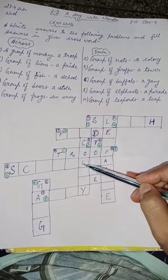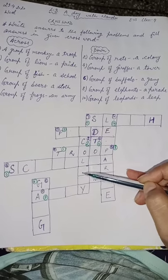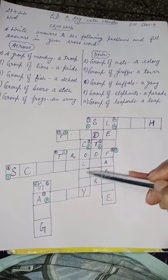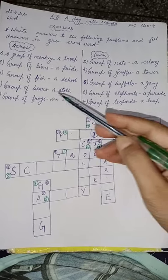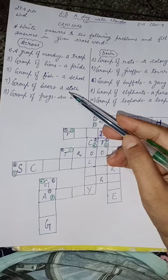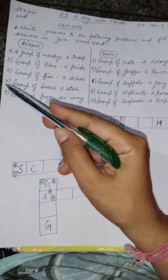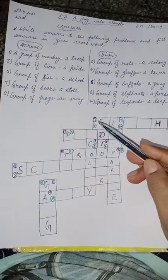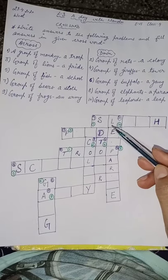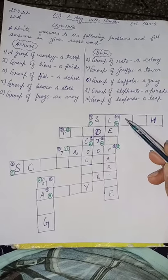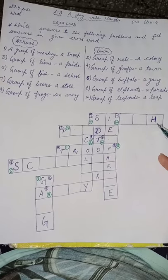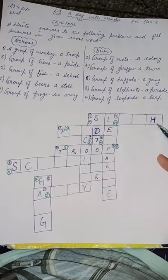I have written two alphabets; you have to write the rest on your own. For example, the group of bears is called a sloth. Where is number 7? It should be written on number 7 — this is number 7. S-L is written for you; the rest of the alphabets you have to write on your own, and the last alphabet H I have written for you.